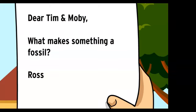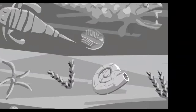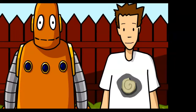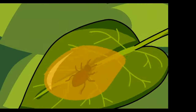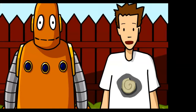Dear Tim and Moby, what makes something a fossil? A fossil is a remnant of an organism — usually at least several thousand years old and found in the ground. Not every organism gets fossilized after it dies; it's a pretty rare occurrence. Fossilization has to start off with the right circumstances, like a quick burial. A body fossil is a part of the original organism that's been preserved, like a bug that got trapped in amber — a type of sticky tree sap. Over time the sap hardened. Body fossils are usually found in places where bacteria, insects, and the other things that cause decay aren't able to thrive.